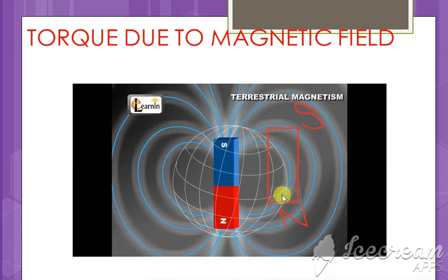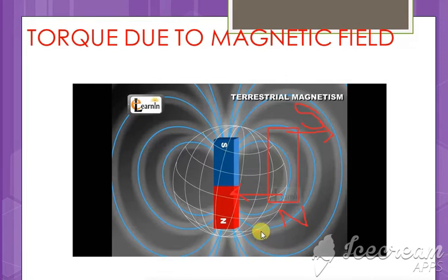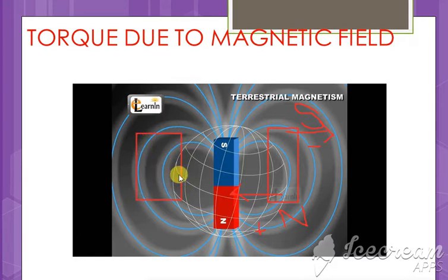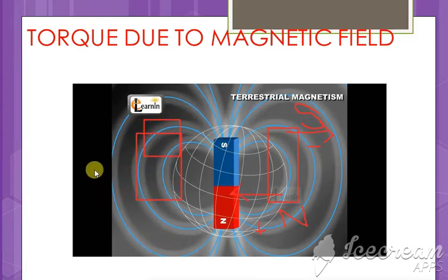The north pole face will experience a force, and the south pole will also experience a force. Those two forces are in opposite directions — if one is positive, the other will have the value of minus. When they act in opposite directions, the object moves in circular motion, it begins to rotate, and finally the object will change its position.